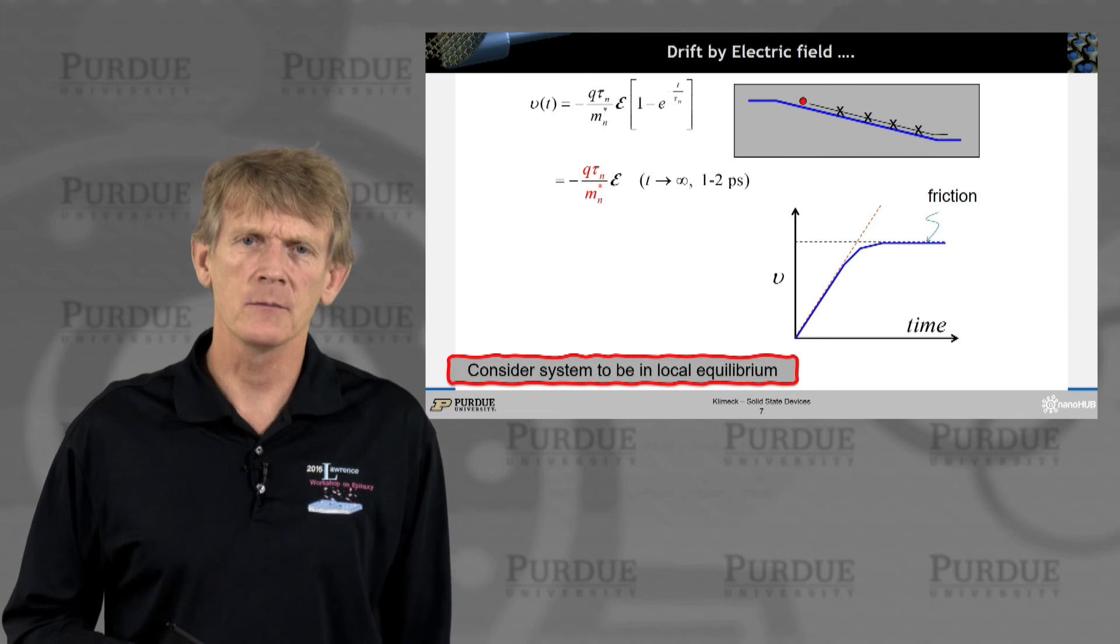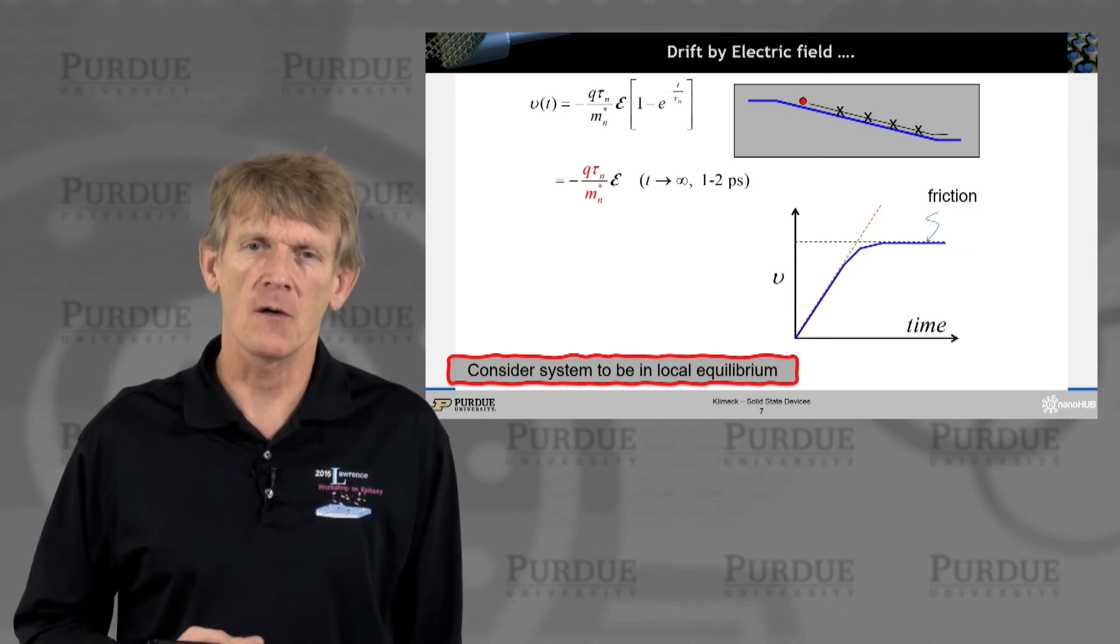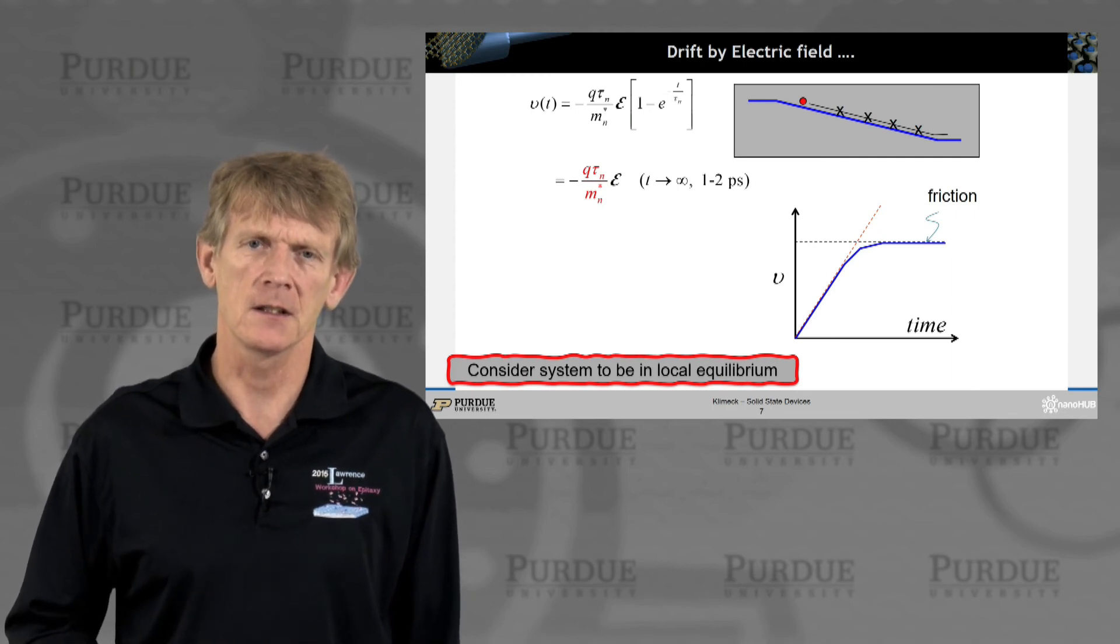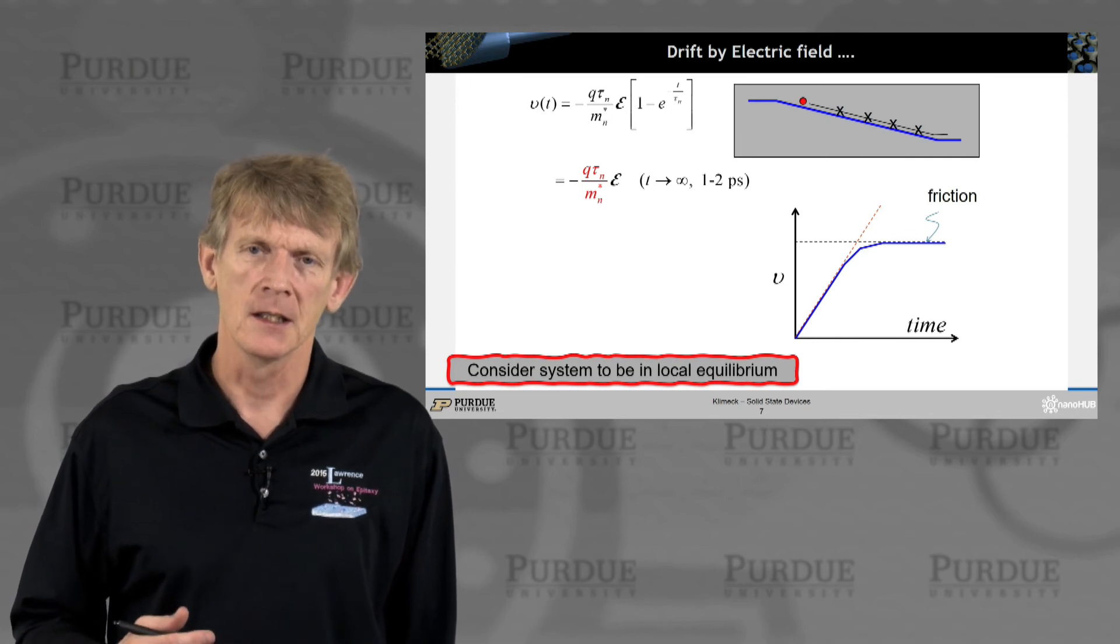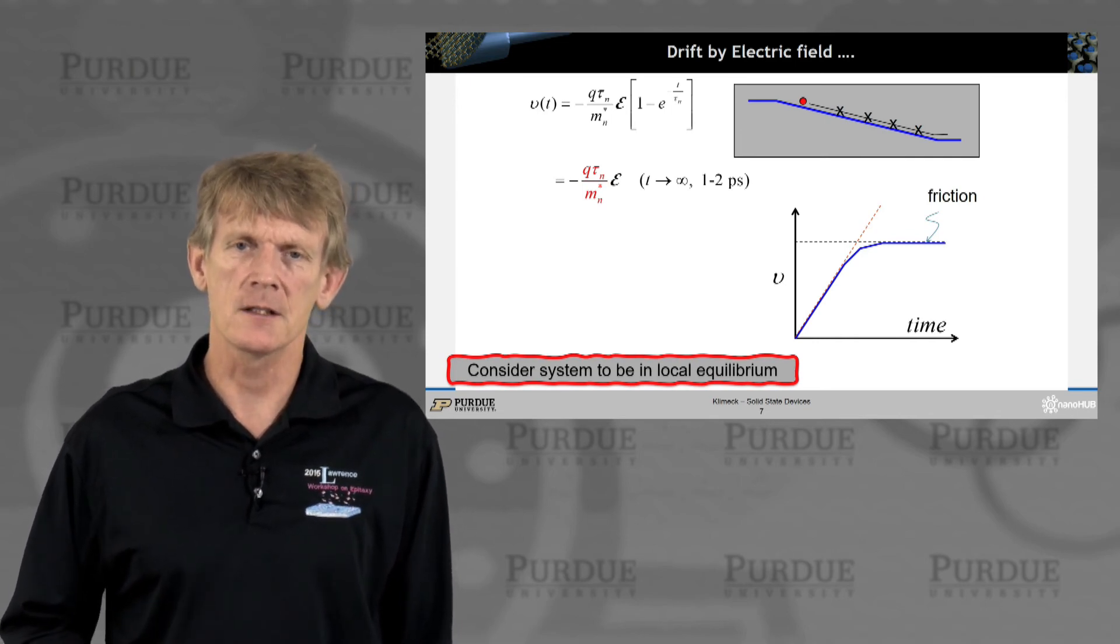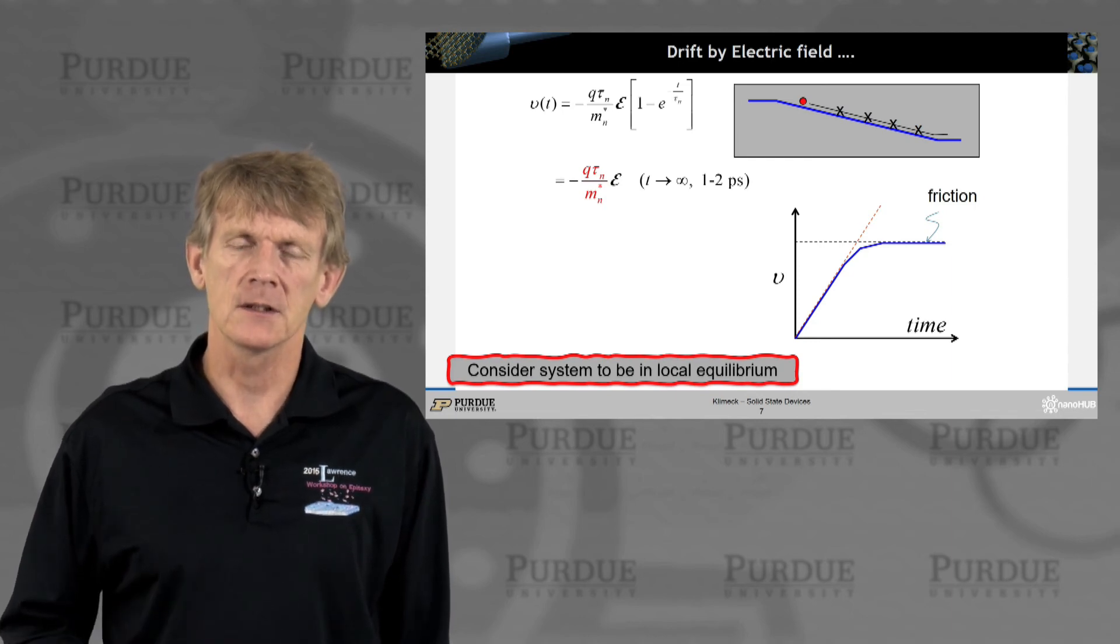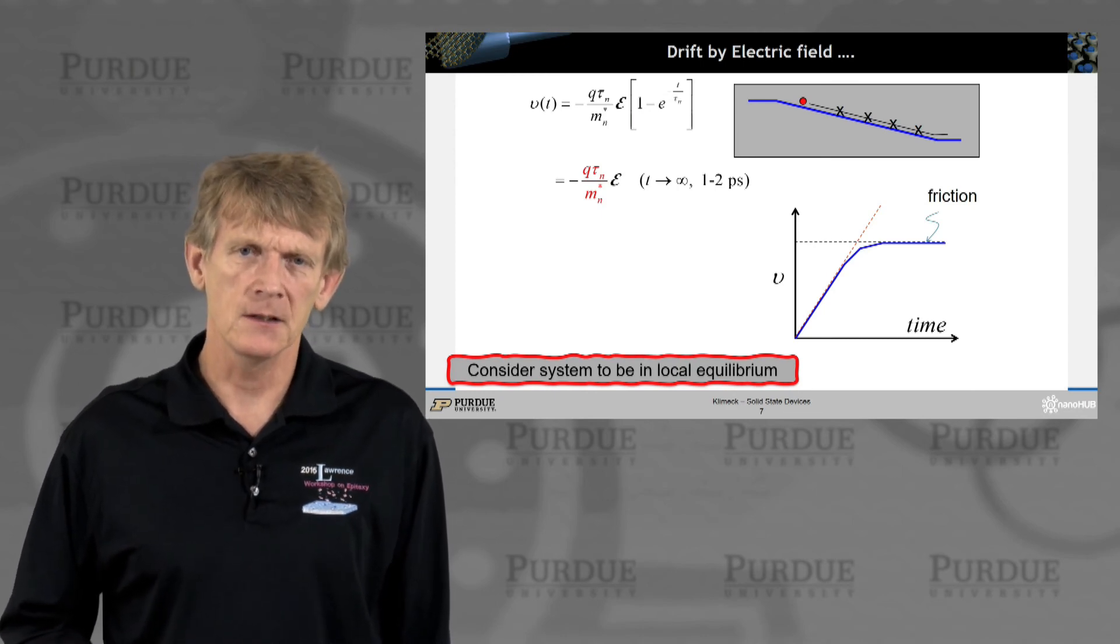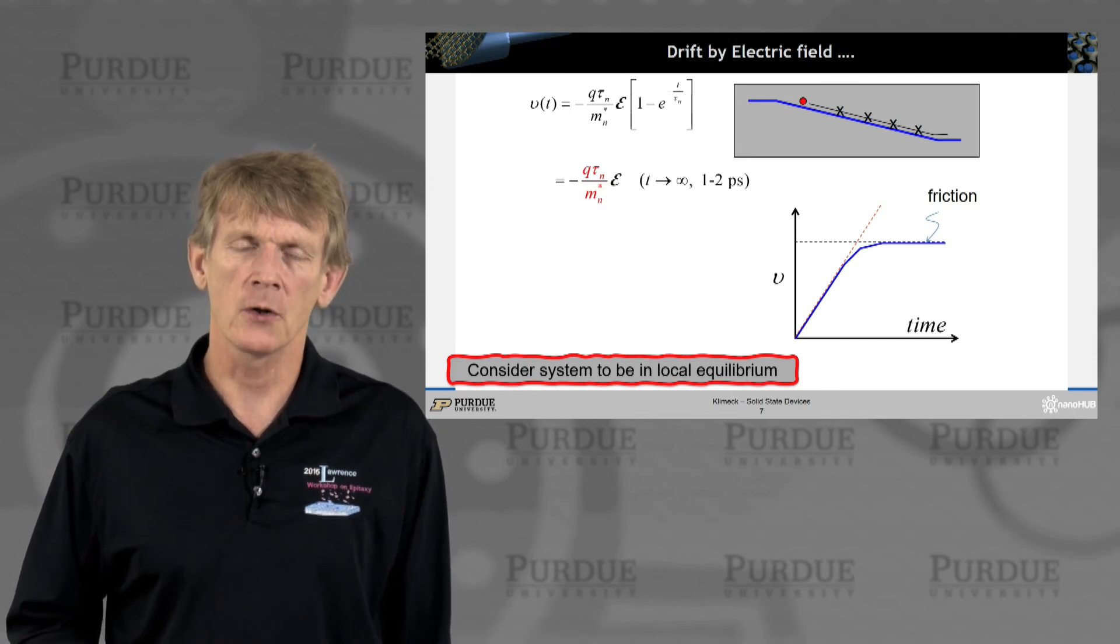Now, infinity here means 1 to 2 picoseconds. So that tells you how fast these electronic and relaxation processes in a semiconductor are. This is incredibly fast. You don't have to wait a minute for an electron to reach its terminal velocity. But it is happening incredibly fast. And you have to have really strong experimental expertise and setups to actually resolve these really short-term temporal responses.